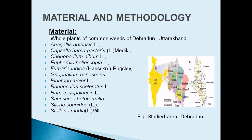Materials used in this study: whole plants of common weeds of Dehradun were collected. The plants studied include Anagallis arvensis, Capsella bursa-pastoris, Chenopodium album, Euphorbia helioscopia, Fumaria indica, Nepelium cannesens, Plantago major, Ranunculus scleratus, Rumex nepalensis, Saussurea heteromalla, Solanum nigrum, and Stellaria media.